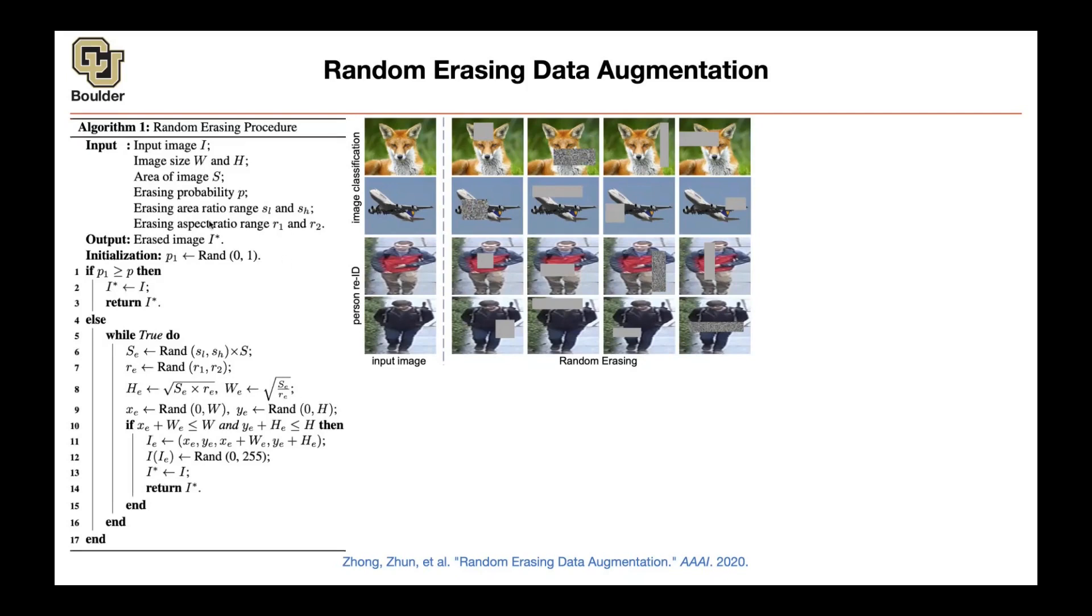How do you actually do it? This is the actual source code for it. It's a few lines of code, 17 lines. You take an image and return the erased, augmented image. Your image has a height and width. The area of the image is W times H, that's your S, that's the input to the random erasing procedure. With probability p you're going to erase some portions of your image. With probability 1 minus p, you just return your original image. P is a hyperparameter that you choose.